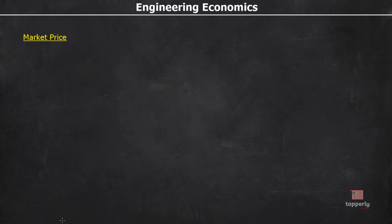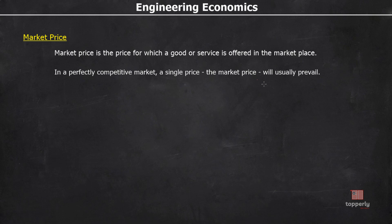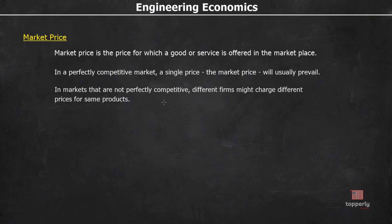Market price is the price for which a good or service is offered in the market. In a perfectly competitive market, a single market price will usually prevail — for example, agricultural products like rice and vegetables show no significant price difference between different sellers. However, in markets that are not perfectly competitive, different firms may charge different prices for the same product. For example, when Jio entered the telecom market in India in 2016, they provided all services for free to win customers from competitors. Another reason is brand loyalty — Rolex watches are considered luxury items even though competitors produce watches of similar quality.